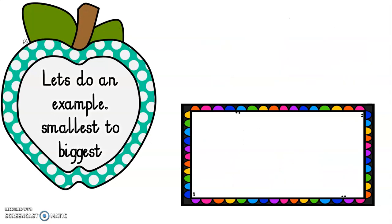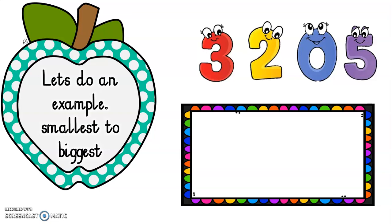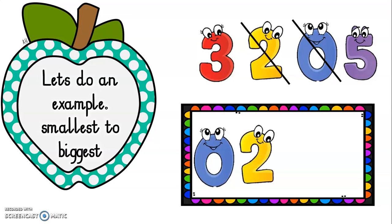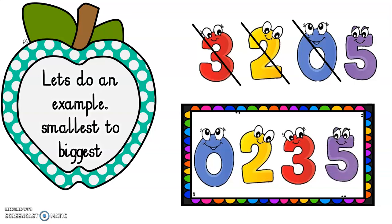Now we are going to use a new set of numbers and do an example from the smallest number to the biggest number. Here are your numbers: 3, 2, 0, and 5. Pause your video and put these numbers from the smallest number to the biggest number. The smallest number is 0. The next smallest number is 2. The next smallest would be 3. And the last number is 5.